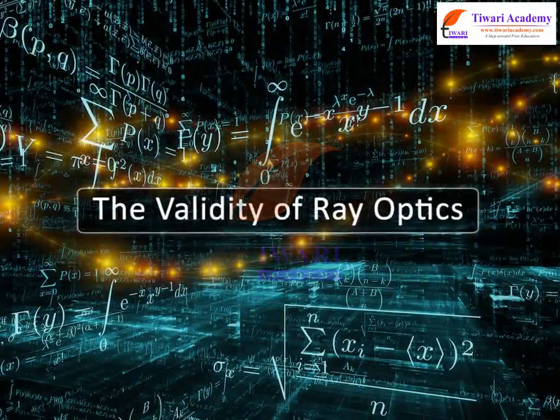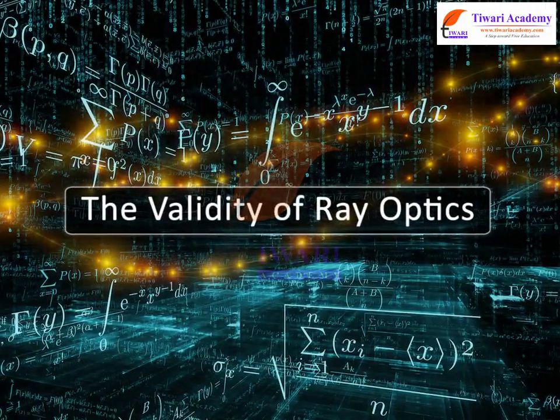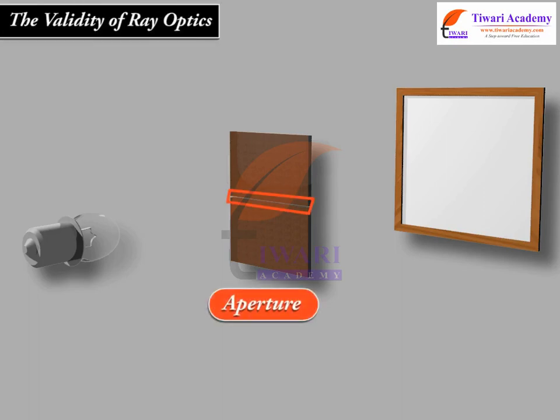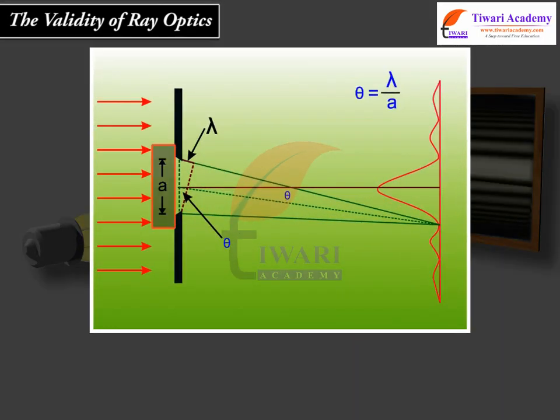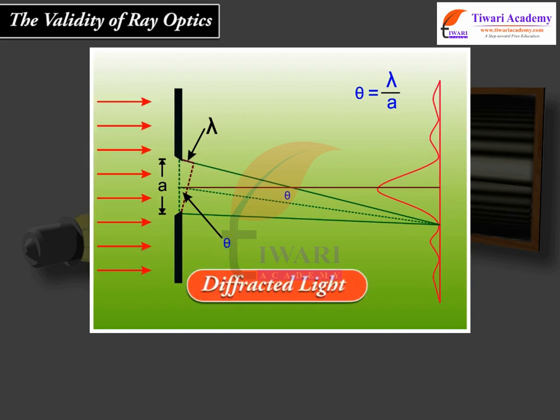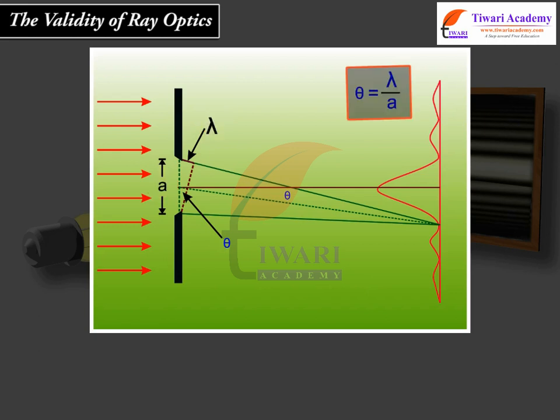The validity of ray optics. An aperture, i.e. slit or hole, of size A illuminated by a parallel beam sends diffracted light into an angle of approximately lambda upon A.